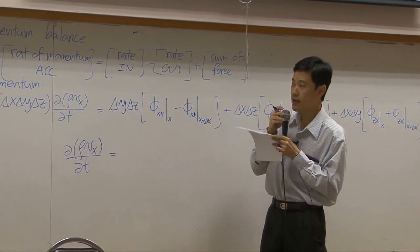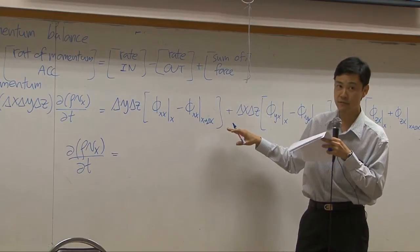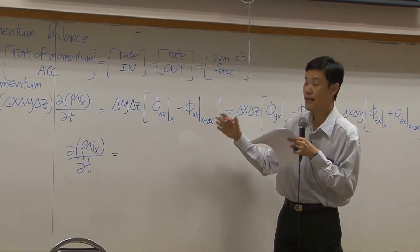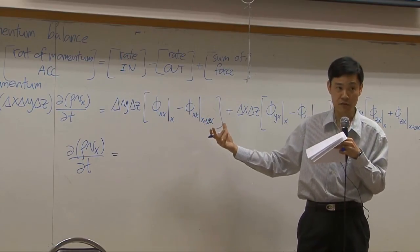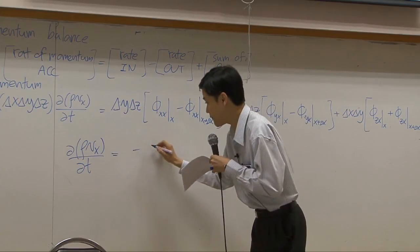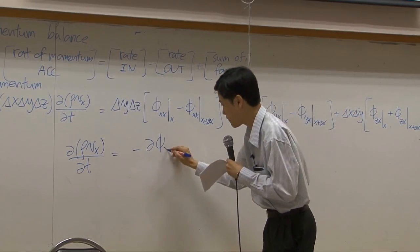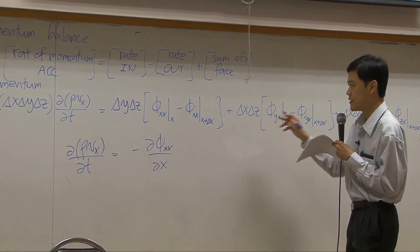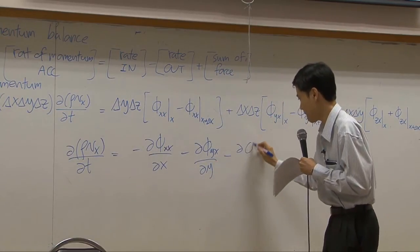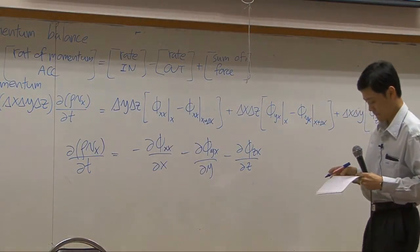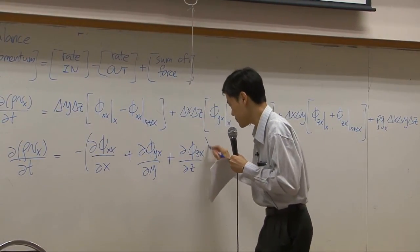If you divide the whole equation by delta x delta y delta z. This term should be rho vx by dt. The second term here, if you divide it by delta x delta y delta z, this term will be dropped and you get delta x as denominator. And if you take the limit delta x delta y delta z approaching zero, this term appears to be differential. So you have partial differentiation. Similar here. Then, I can take minus signs out to get this kind of equation.